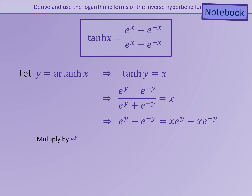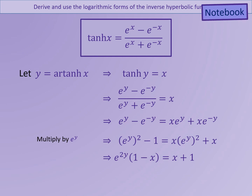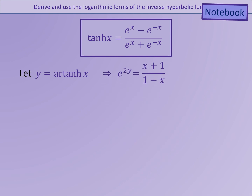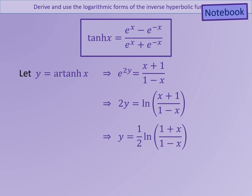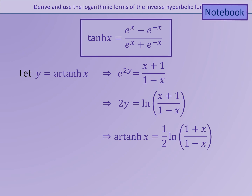We're going to begin by multiplying the denominator across, giving e to the y minus e to the minus y equals x e to the y plus x e to the minus y. Now we multiply both sides by e to the y to eliminate the negative powers. This leads us to e to the 2y minus 1 equals x e to the 2y plus x. We take terms with y to one side and terms without y to the other, then factorise out e to the 2y. Dividing through by the bracket 1 minus x gives us e to the 2y equals x plus 1 over 1 minus x. Taking logs of both sides gives 2y equals ln of x plus 1 over 1 minus x. Dividing by 2 gives us y equals one half ln of 1 plus x over 1 minus x. This is the expression for inverse tanh of x.